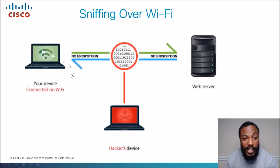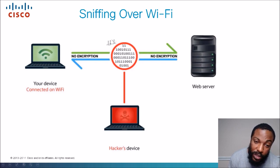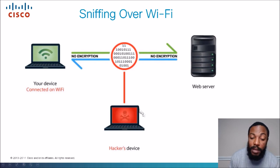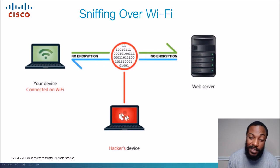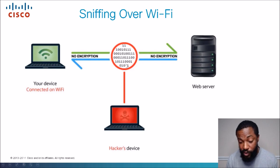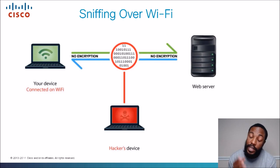Looking at this slide, we've got this user connected on Wi-Fi. When his information is not encrypted and it's traveling through radio waves to get to the web server, we've got this hacker on a red laptop. He is sniffing this information using packet capture software like Wireshark, and he can read usernames and passwords and stuff like that. If your information is not encrypted, somebody can take it and use it to their advantage. No bueno.